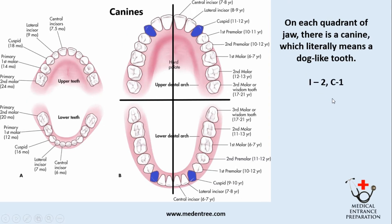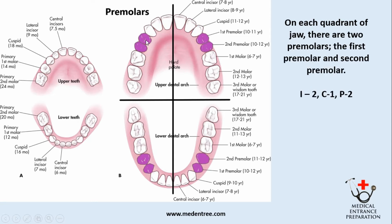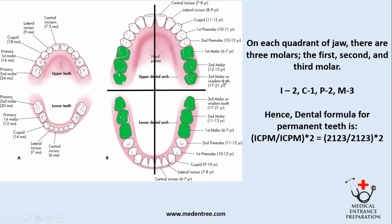Now let's move to canines. On each quadrant of the jaw there is one canine, which literally means a dog-like tooth. I have highlighted the canines with blue. In each quadrant there is one canine tooth, so C equals 1. On each quadrant of the jaw there are two premolars — the first premolar and second premolar, highlighted in purple — so P equals 2.